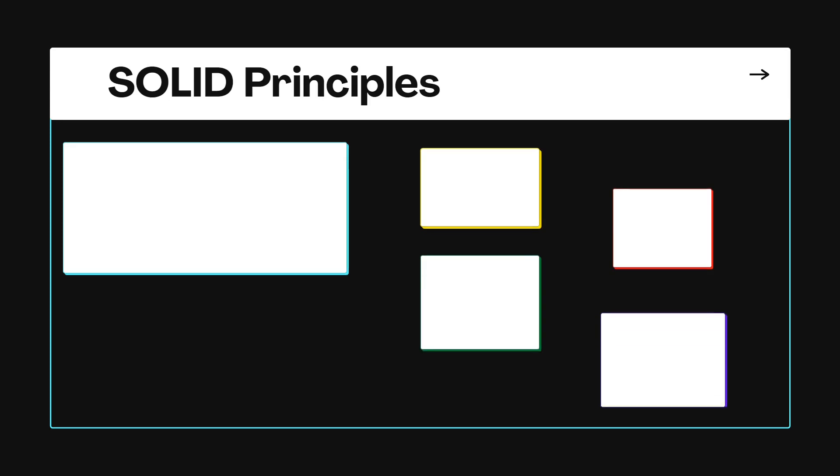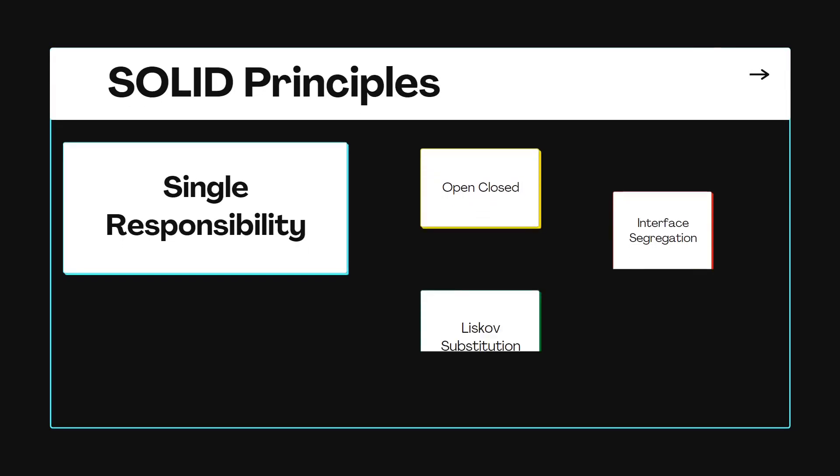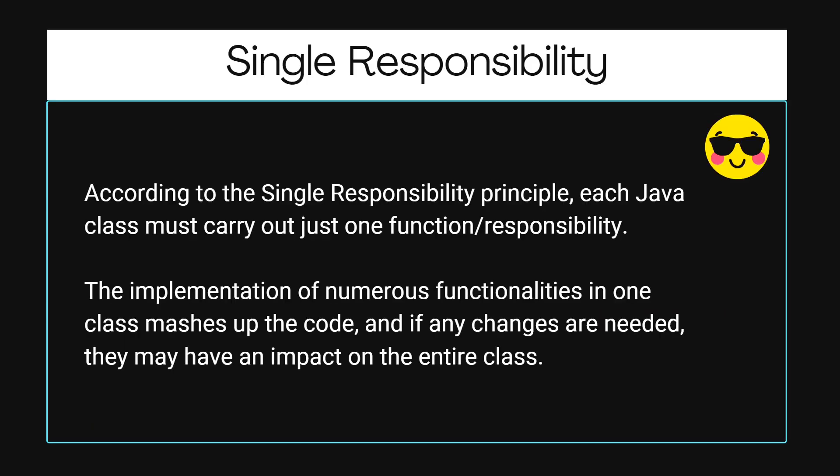There are five principles in SOLID, and each letter stands for a particular principle. The first principle is Single Responsibility. Single Responsibility Principle says that whatever code you have written should only be doing one and only one thing. Each Java class must carry out one function or responsibility.